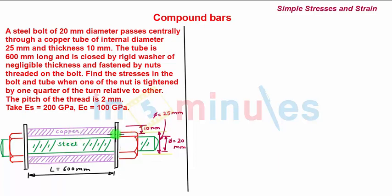The steel bolt and copper tube are enclosed inside these two washers by means of two nuts at their ends. The problem asks: if the nut is rotated, what is the corresponding effect on the steel bolt and copper tube?